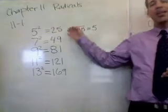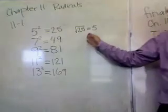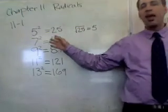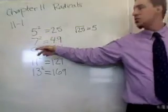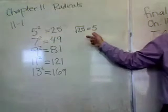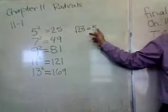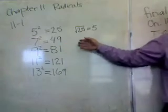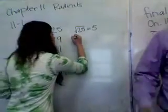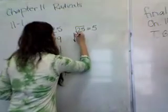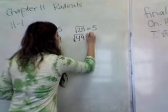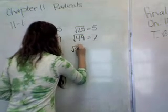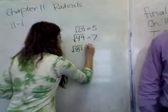If you want to take it back down to its original source — what we call its root — then you have to take what's called the square root. So the square root of 25 is equal to 5; 5 is the root. The square root of 49 is equal to 7. Please write them down in your book. The square root of 81 is 9. The square root of 121 is 11. And the square root of 169 is 13.